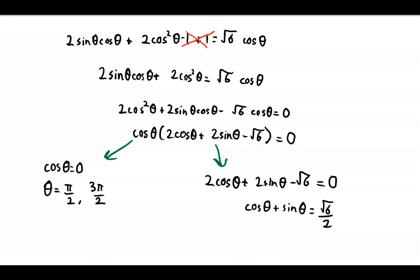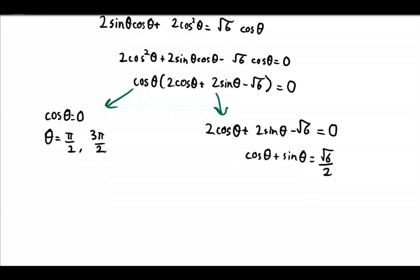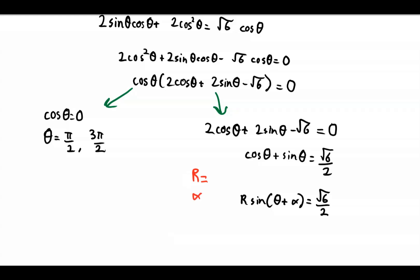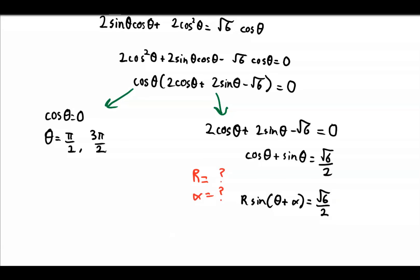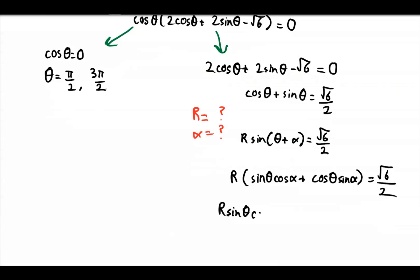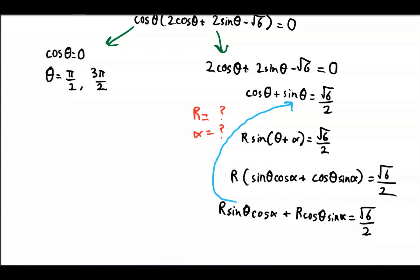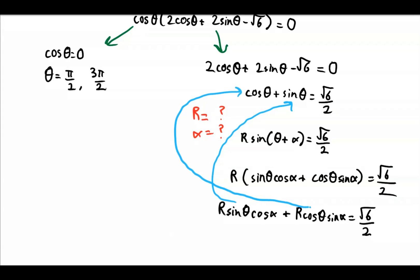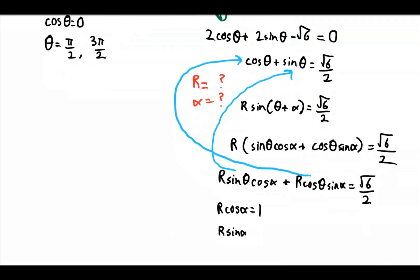In order to solve this we need to write cos theta plus sine theta in its harmonic form. We rewrite it as r sine theta plus alpha. Using the sine angle addition formula, this expands to r multiplied by sine theta cos alpha plus cos theta sin alpha, equal to root 6 over 2. We must have r cos alpha equal to 1 and r sin alpha equal to 1.